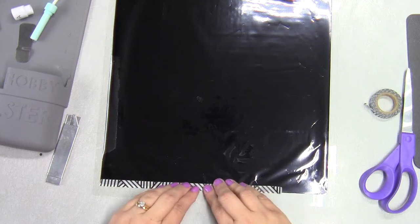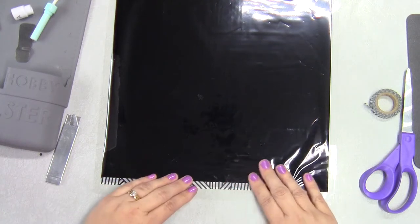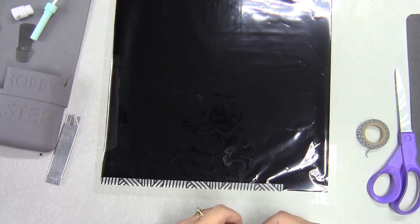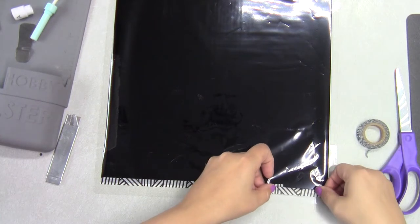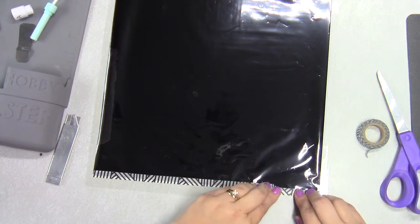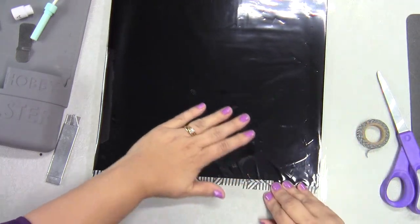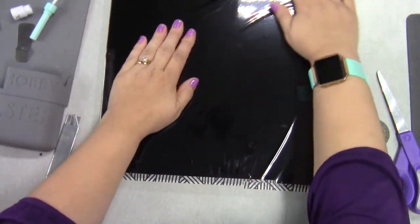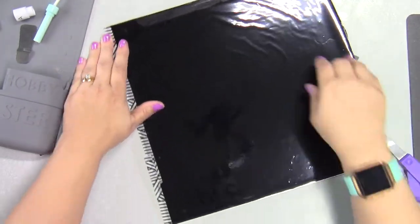But to be honest, I had some wrinkles in it, and you wouldn't know it in my final project. So if you have a few little wrinkles, don't obsess over it, don't get all weird about it. Just go ahead and get it down as smooth as you possibly can and go from there. The wrinkles really don't affect it. I have tried this maybe four or five different projects now after this one, and I never had any problems with a couple of wrinkles in the foil.